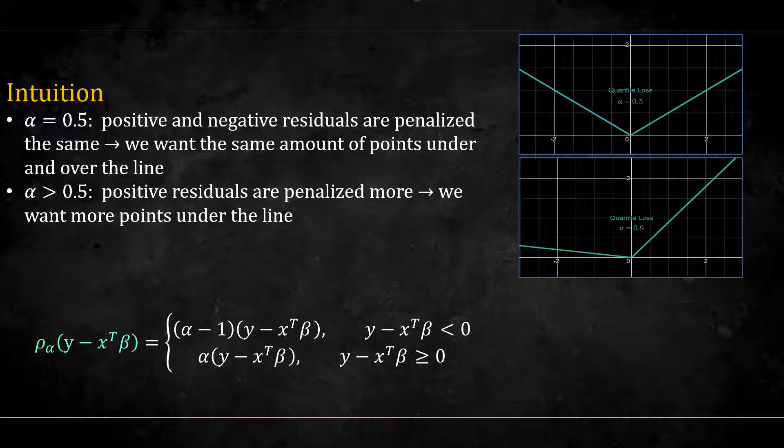When alpha is greater than 0.5, positive residuals are penalized more than negative ones. That is, we want more points under the line than over it.